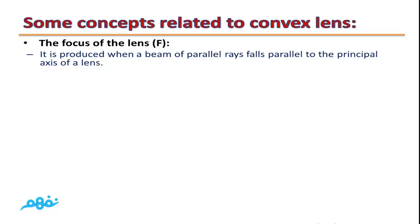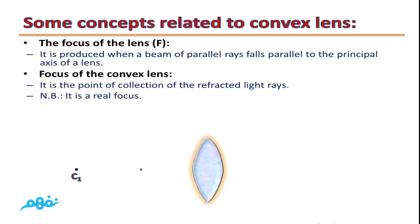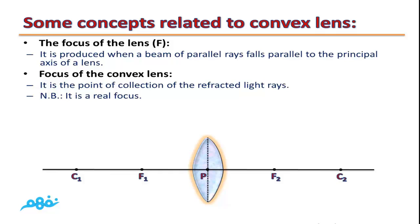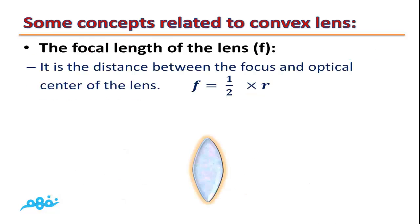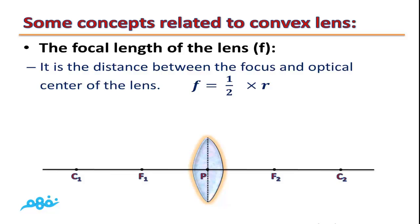Focus of the lens: it is produced when a beam of parallel rays falls parallel to the principal axis of a lens. For a convex lens, the focus is the point of collection of the refracted light rays, and it is a real focus because it collects the refracted rays. The focal length of the lens is the distance between the focus and the optical center, and the focal length is half the radius of curvature.